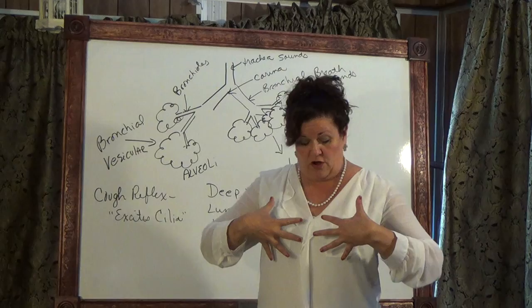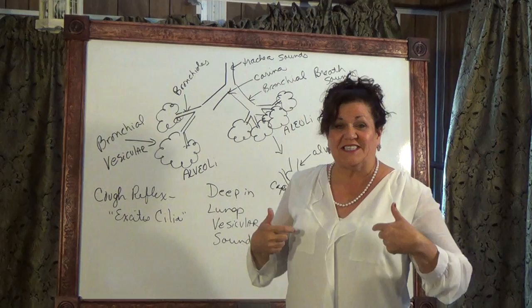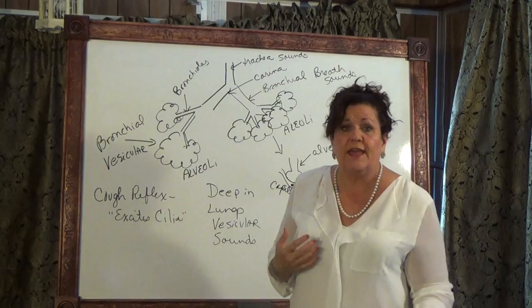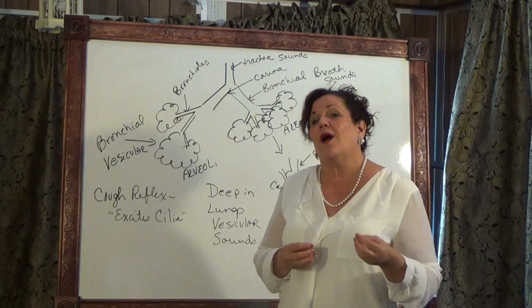Now, a smoker—nicotine paralyzes cilia. So the cilia are totally paralyzed. And when a smoker tries to quit smoking, the nicotine is out of their system in 72 hours. And these little cilia start sweeping like crazy. The person is coughing up a lung practically, and they're like, I didn't cough this bad when I smoked. And they go back to smoking, and it stops them from coughing because it paralyzes their cilia again.